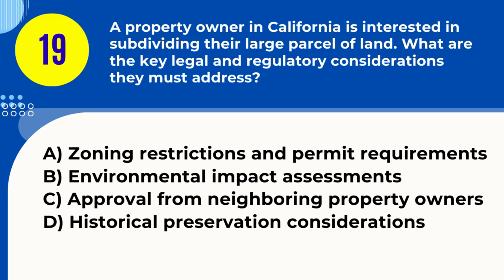Question 19. A property owner in California is interested in subdividing their large parcel of land. What are the key legal and regulatory considerations they must address? A. Zoning restrictions and permit requirements B. Environmental impact assessments C. Approval from neighboring property owners D. Historical preservation considerations. Answer: A. Zoning restrictions and permit requirements. Explanation: Subdividing land in California involves navigating zoning restrictions and obtaining the necessary permits.